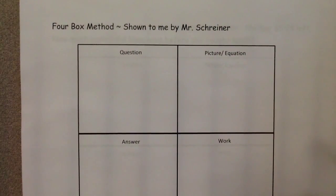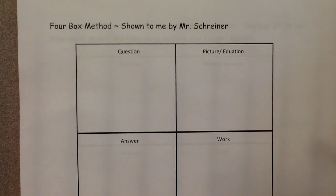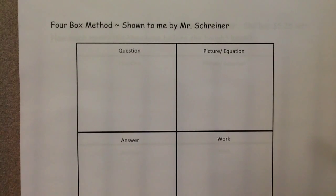What we worked on is drawing out pictures that go with some story problems. This method, the four-box method, was shown to me by Mr. Schreiner a year or two ago. I know they use it in fourth grade — it makes sense to them, I liked it, it's simple, the kids get it, so I've just kept it going. It's basically a graphic organizer that helps the children organize their thoughts.